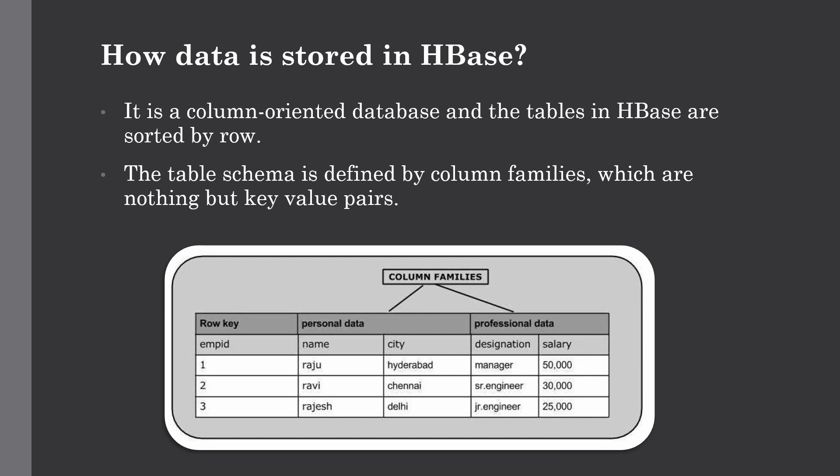In HBase, subsequent column values are stored contiguously on the disk and each cell value of the table has a timestamp. Simply put, an HBase table is a collection of rows, rows are a collection of different column families, column families consist of numerous columns, and columns are collections of key-value pairs. That was all about how data is stored in HBase.